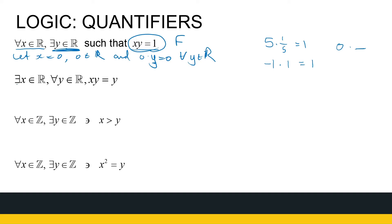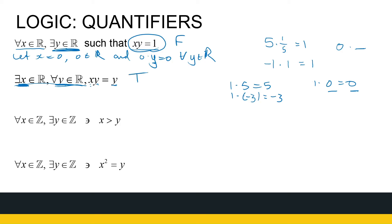Next one: there exists a real number x for every other real number y, such that if I multiply x with y, I'll get y back. Pause and think about it — true or false. What this statement says is I can find one real number that works for every other real number. You would think of the number 1: 1 times 5 gives 5, 1 times minus 3 gives minus 3, 1 times 0 gives 0. That is the multiplicative identity. So this statement is true. Let x be equal to 1; 1 is a real number, and 1 times y equals y for all real numbers y.